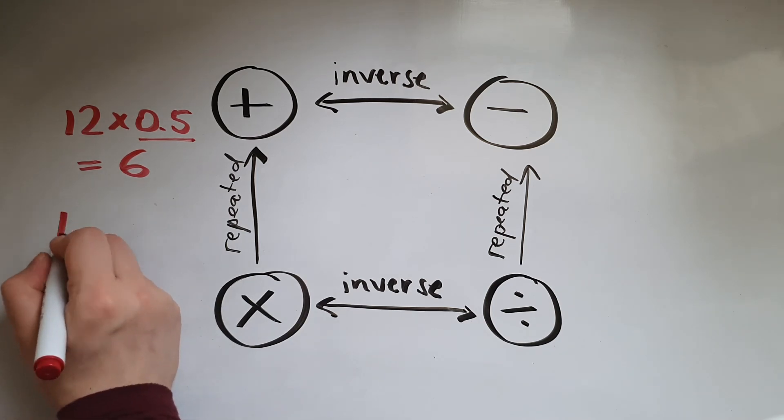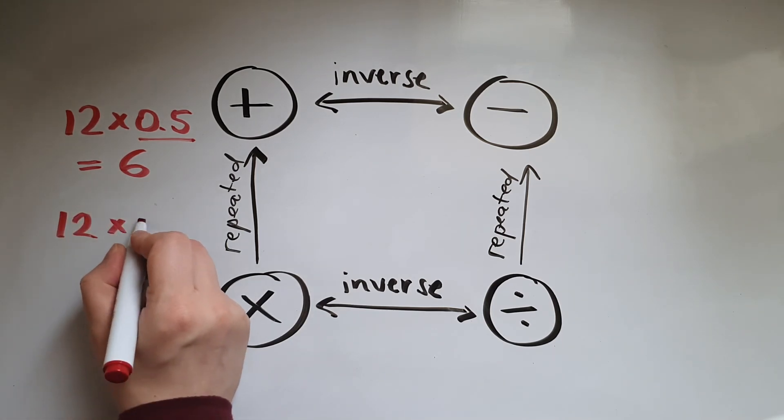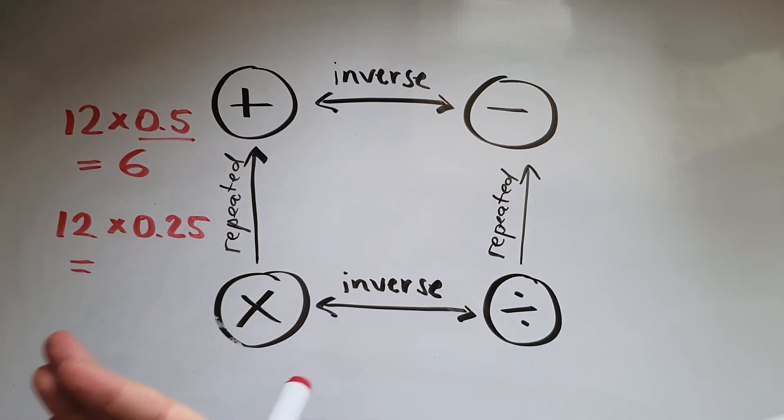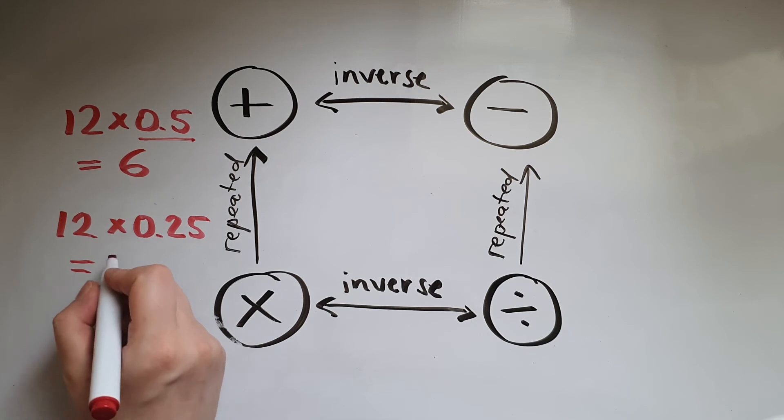If I multiply 12 by 0.25, that means I'm getting a quarter of 12 because 0.25 as a decimal represents a quarter. So the answer would be 3.